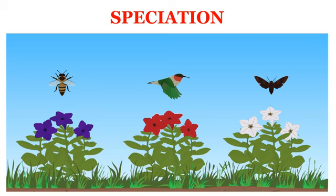Also, natural selection may operate differently in these different geographic locations. For example, in the territory of one subpopulation, beetles are eliminated by eagles, but this does not happen in another subpopulation where crow numbers are very high. As a result, the green variation will not be selected at the first site but will be strongly selected at the second. Together, the process of genetic drift and natural selection will result in these two isolated subpopulations of beetles becoming more and more different from each other. Eventually, members of these two groups will be incapable of reproducing with each other even if they happen to meet.